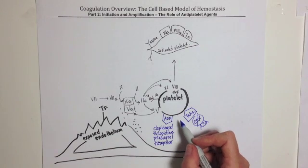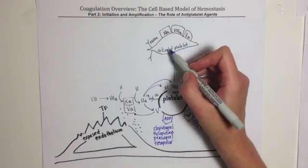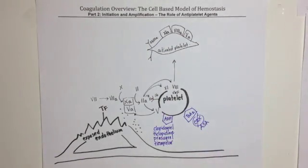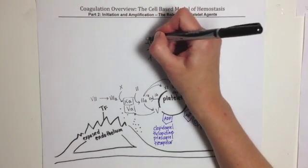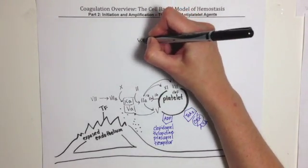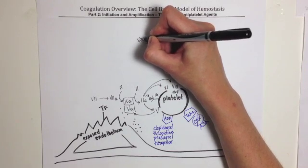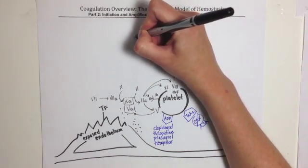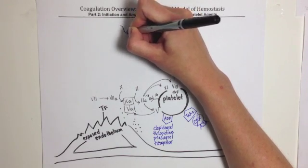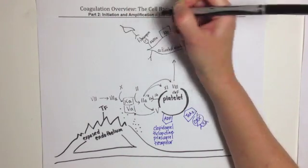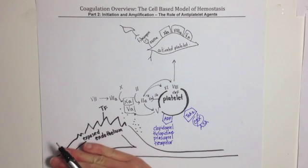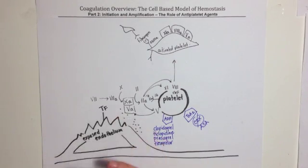Ultimately, inhibiting platelet activation inhibits the expression of the 2B3A receptor. The 2B3A receptor is important because it is involved in the terminal step of platelet aggregation, which occurs when a molecule of fibrinogen, or factor I, binds with another 2B3A receptor on another activated platelet, forming a sticky mesh that begins to cover over the exposed endothelium and begin the repair process.